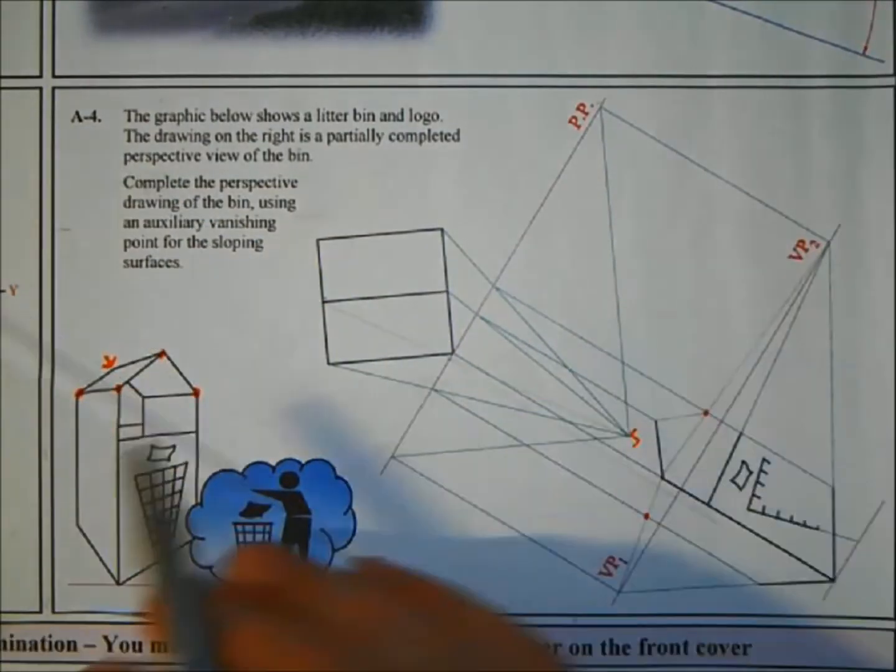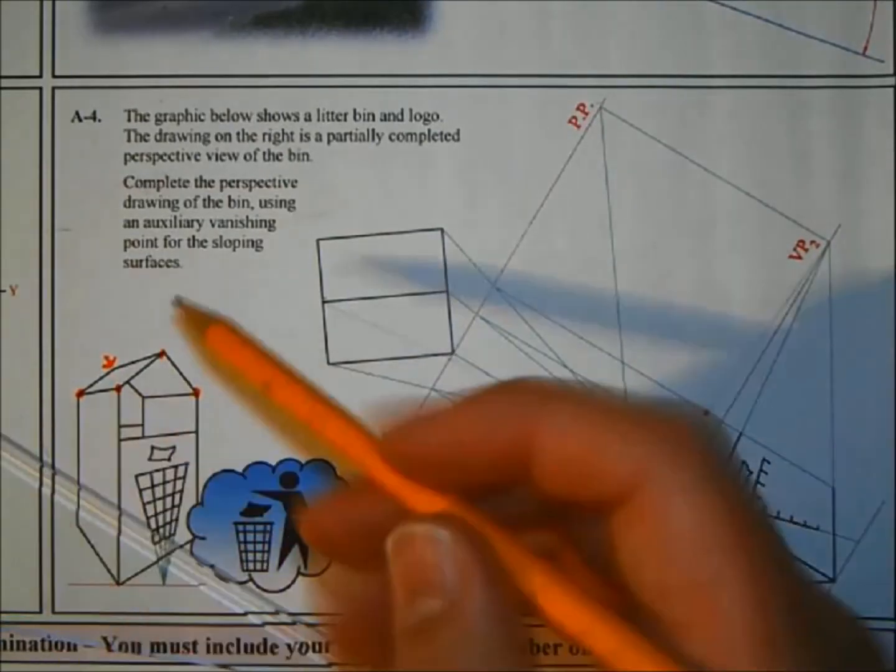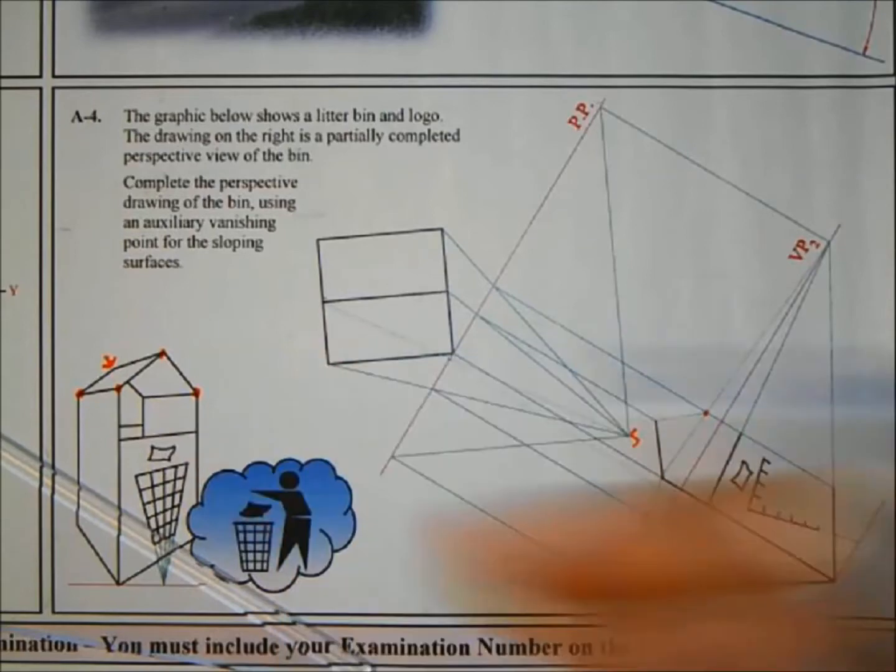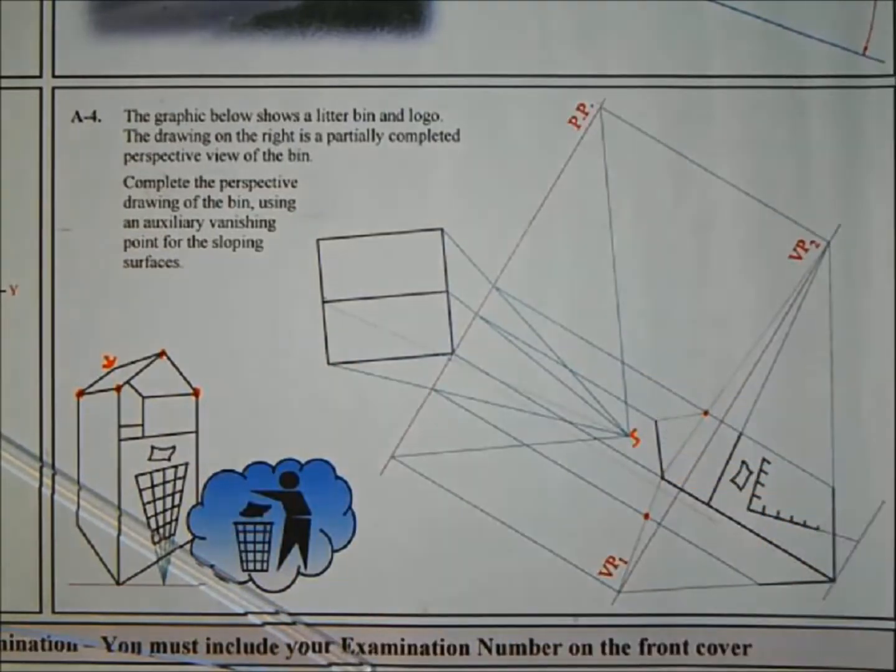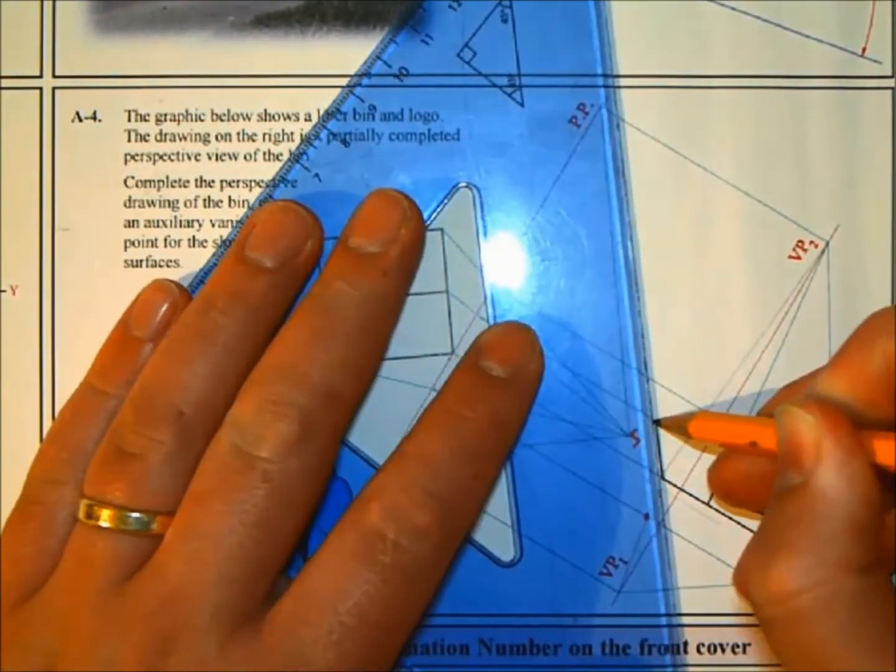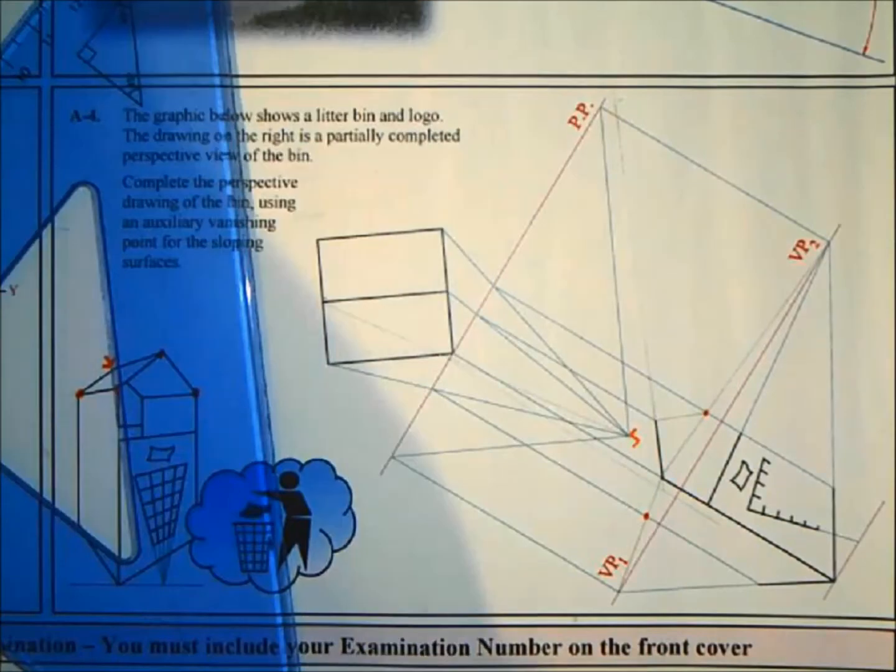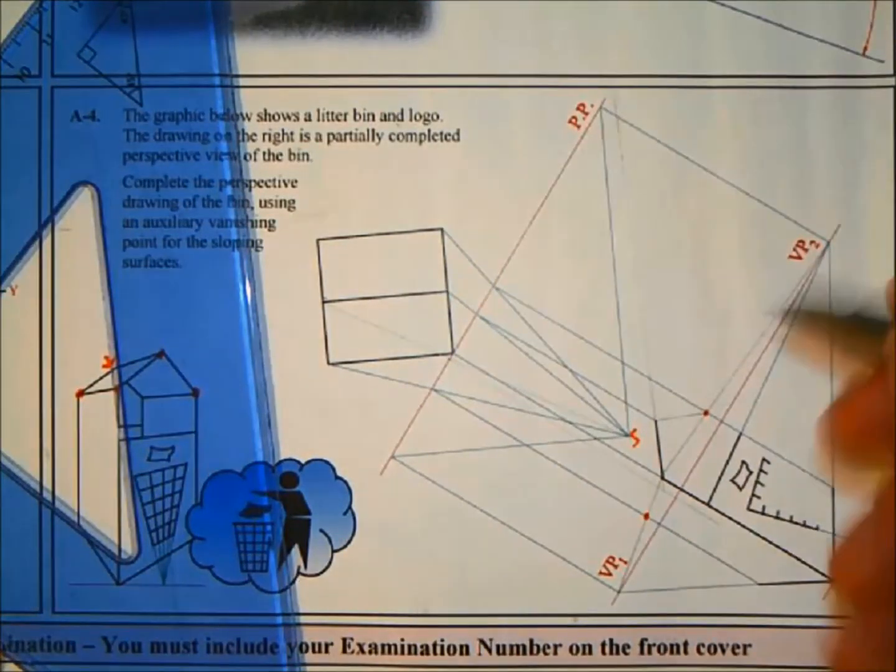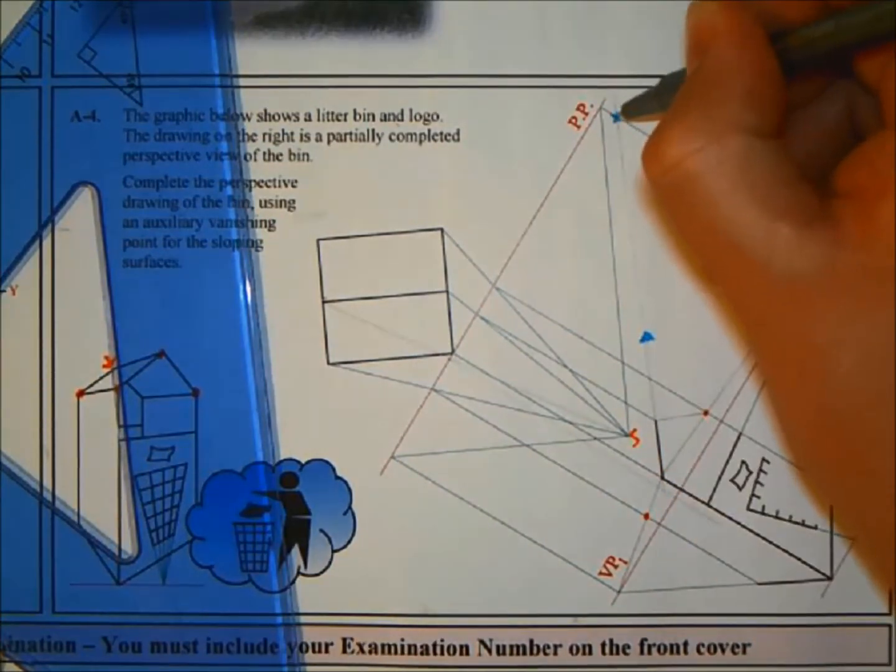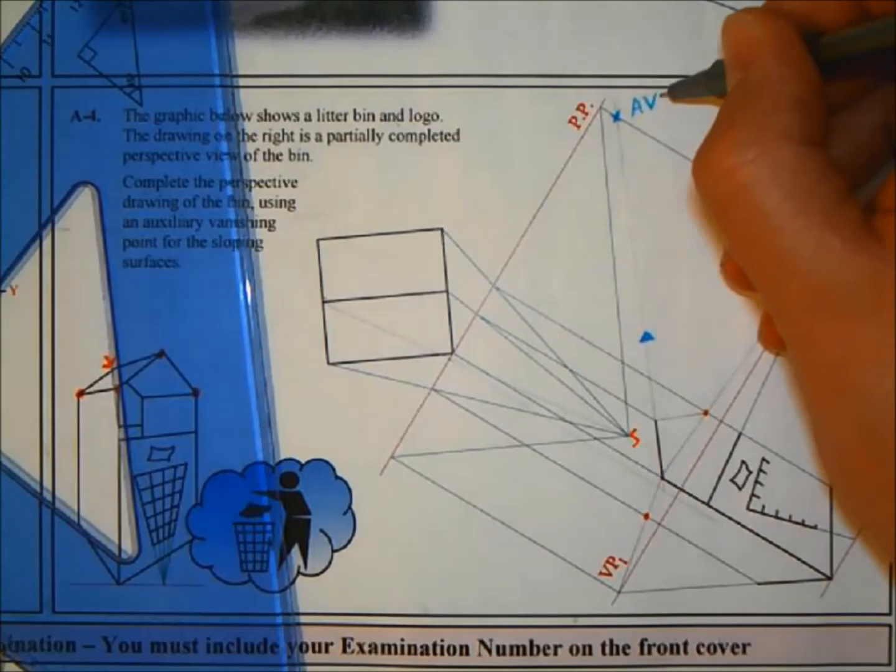Now they told you to use auxiliary vanishing points for the sloping surfaces. Looking at the question they should give you the angle or the height but they haven't given you any of that because you only have the plan. What they have given you is they started doing one of the slope surfaces for you. So if I extend that back it has to project back to a vanishing point. Remember auxiliary vanishing points are always above the normal vanishing point. If I extend this back, it will give me my auxiliary vanishing point.